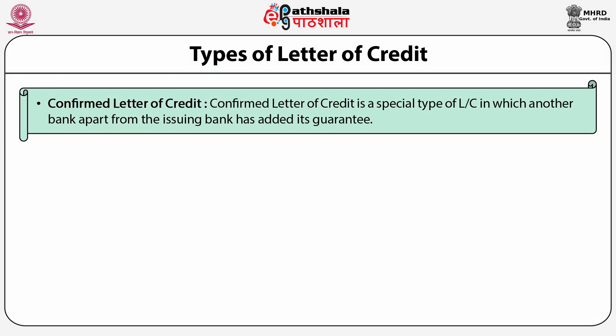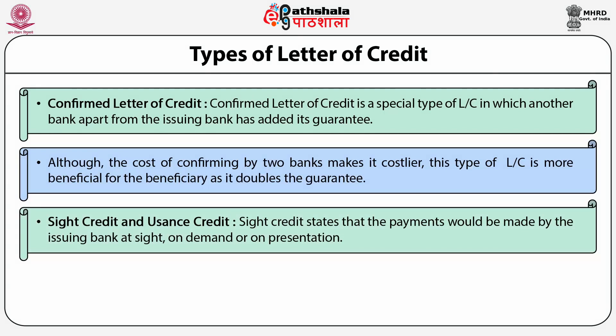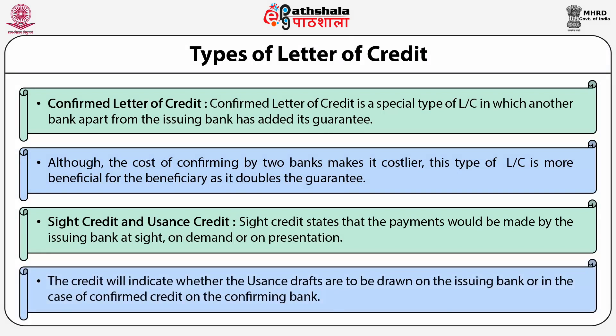Confirmed letter of credit is a special type in which another bank, apart from the issuing bank, has added its guarantee. Although the cost of confirming by two banks makes it costlier, this type is more beneficial for the beneficiary as it doubles the guarantee. Site credit states that payments would be made by the issuing bank at sight, on demand, or on presentation. In case of usance credit, a draft is drawn on the issuing bank or the corresponding bank at a specified usance period.